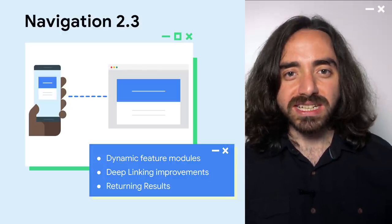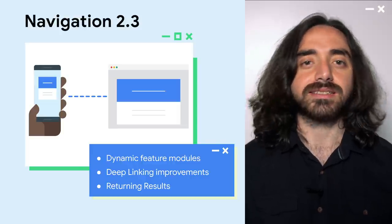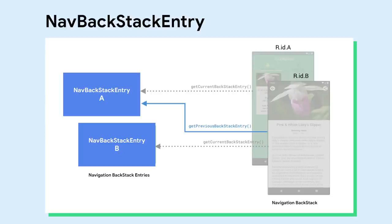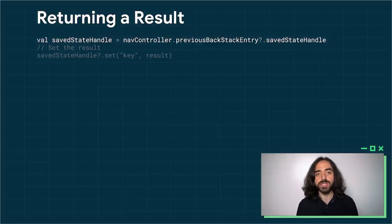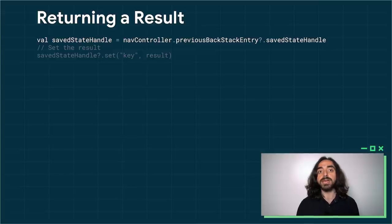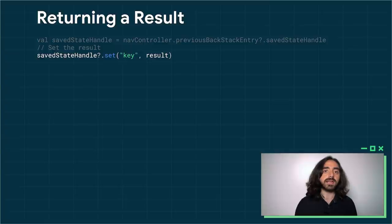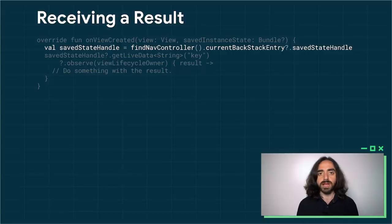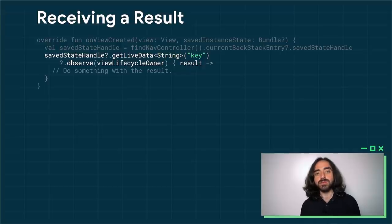My favorite new feature: returning a result. In Navigation 2.3, each screen in your application now has a nav backstack entry, which gives you access to the saved state of that entry. To ensure your results are kept over configuration changes or process death, Navigation uses the SaveStateHandle class to pass data between screens. Your fragments can access the previous fragment's saved state handle by using the previous backstack entry. Once you obtain the SaveStateHandle from the previous entry, you can set the result values on the saved state. To observe the result, you can get the same value from the saved state of the current backstack entry and observe the value via LiveData — observation is lifecycle-aware, and because we are using saved state, it works even if your application is restarted between these two screens.